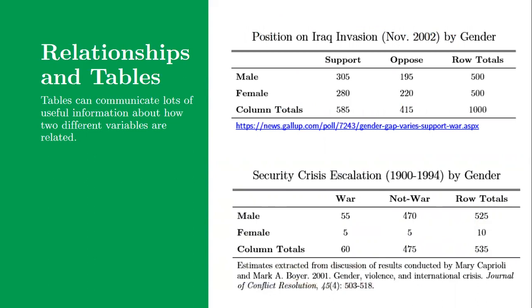The first table looks at support for the Iraq invasion back in 2002 among men and women. There's a thousand people in the sample, that's that number in the bottom right hand corner of that top table. On the far side, you see there's 500 men and 500 women, those are the row totals. We have a sample that's 50-50 split. We can look at the support and oppose column. 305 men apparently supported the Iraq war in November 2002 and 280 women supported it. Slightly more men than women, and slightly more women than men opposed the Iraq war. We can eyeball it, and because the samples are even, we can maybe say it seems like men were more supportive of the Iraq war in November 2002.